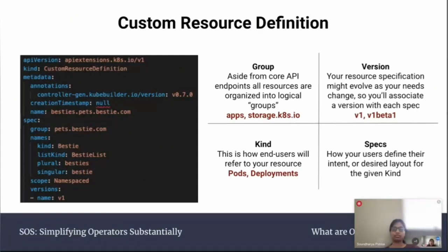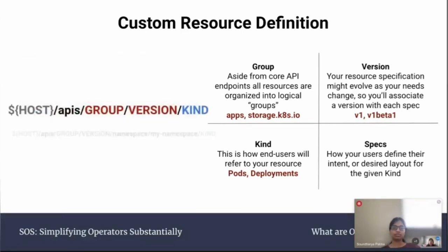For your custom resource, you can have a group, version, kind, and different specs. Aside from the core API groups, there's also apps and storage, and Kubernetes.io for versioning. Different API versions indicate different levels of stability and support: alpha may have some bugs, beta is well tested but may need work, and stable means your application is good. Kind is your resource and how it should be referenced — pods, deployments, or in our instance, VESTI. Specs define how your users specify their desired layout for the given kind, such as container image, port exposure, or deployment configurations.